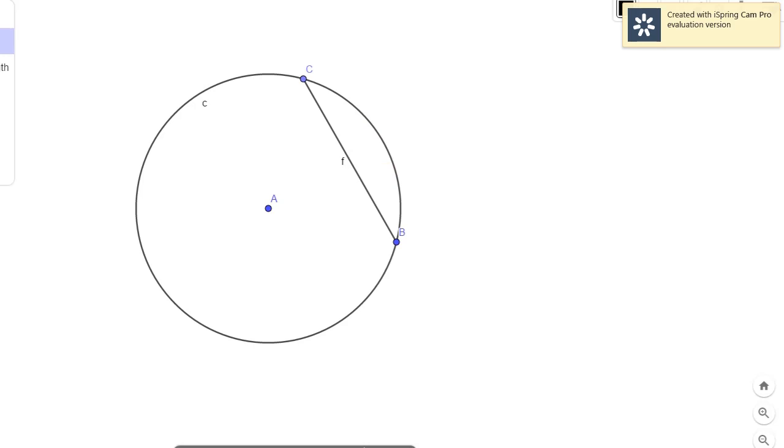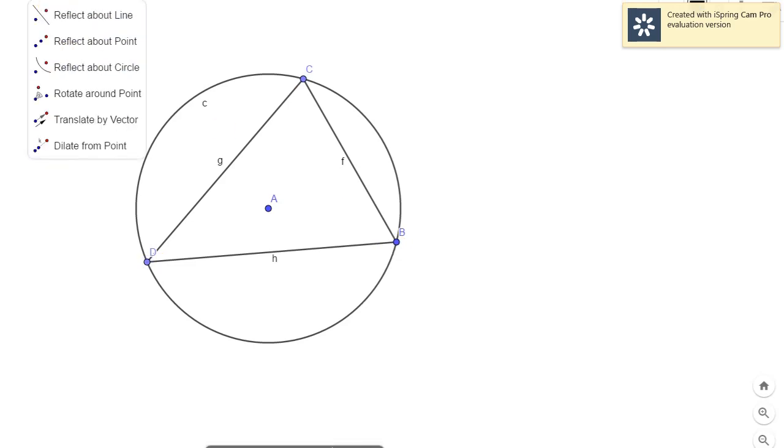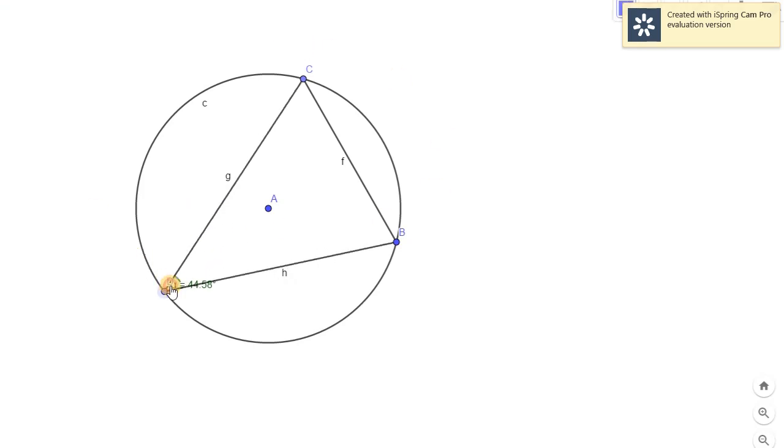And of course, you can have an angle there. Pwede ko magkaroon ng angle. Here, here, and here, and here. Let's find the measure of that angle. The angle here, here. So even if wherever I will take this one, it would still be 44.58. So there would only be one measurement of one inscribed angle on our given major segment.